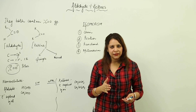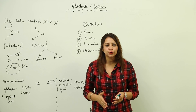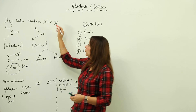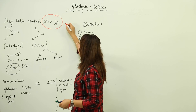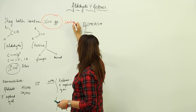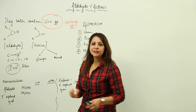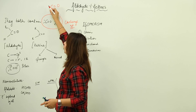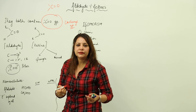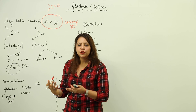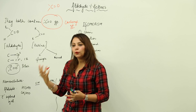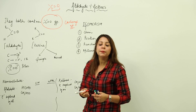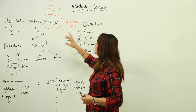We are going to start with the functional groups aldehyde and ketone. Both aldehyde and ketones contain the carbonyl group. The carbonyl group is a carbon double-bonded with oxygen. Any compound that has this group — whether attached to H, an aliphatic chain, or an aromatic compound — is said to be a compound with a carbonyl group.